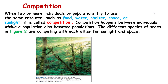Competition occurs when two or more individuals or populations try to use the same resources — such as food, water, shelter, space, or sunlight. Competition can happen between individuals of different species. For example, different species of trees compete with each other for sunlight and space, because producers need sunlight to make their own food.